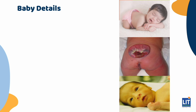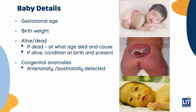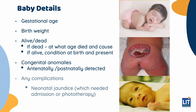Now let's look at the baby details. We need to know the gestational age at which the baby was born, the birth weight, whether the baby is currently alive or dead, and if dead, at what age and what was the cause of death. If alive, what was the condition of the baby at birth and currently. We also need to know if there are any congenital anomalies and whether they were detected antenatally or postnatally, and if there were any neonatal complications, for example neonatal jaundice requiring admission to the unit or phototherapy.